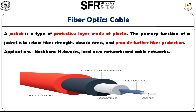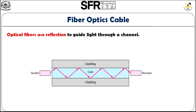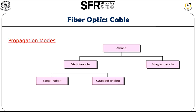Fiber optic cable is mainly used in backbone networks, local area networks, and cable networks. The reflection strategy is used to transfer data through this channel, and inside the core the light signal gets reflected and data is transmitted based on that reflection. In fiber optic cable there are two types of propagation modes: multi-mode and single mode. In multi-mode itself there are two types: step index and graded index.